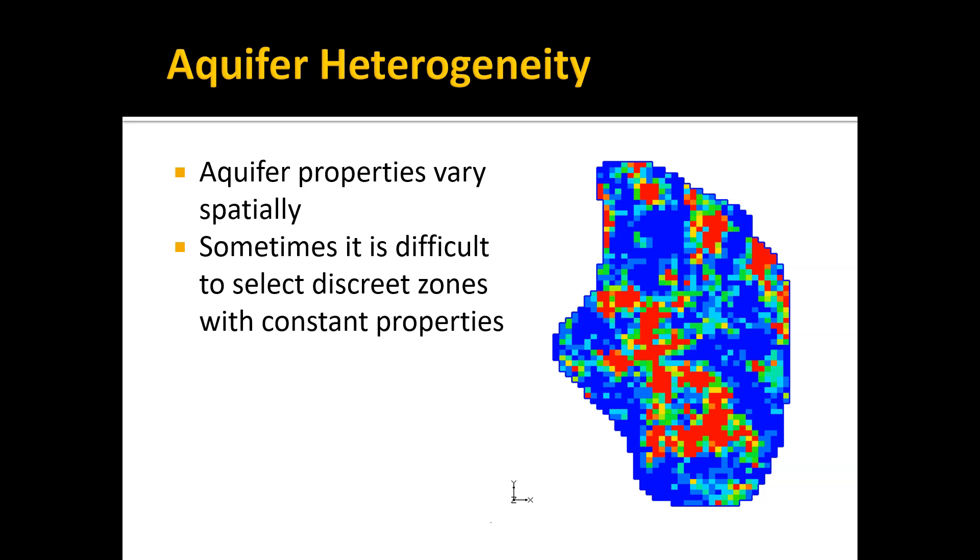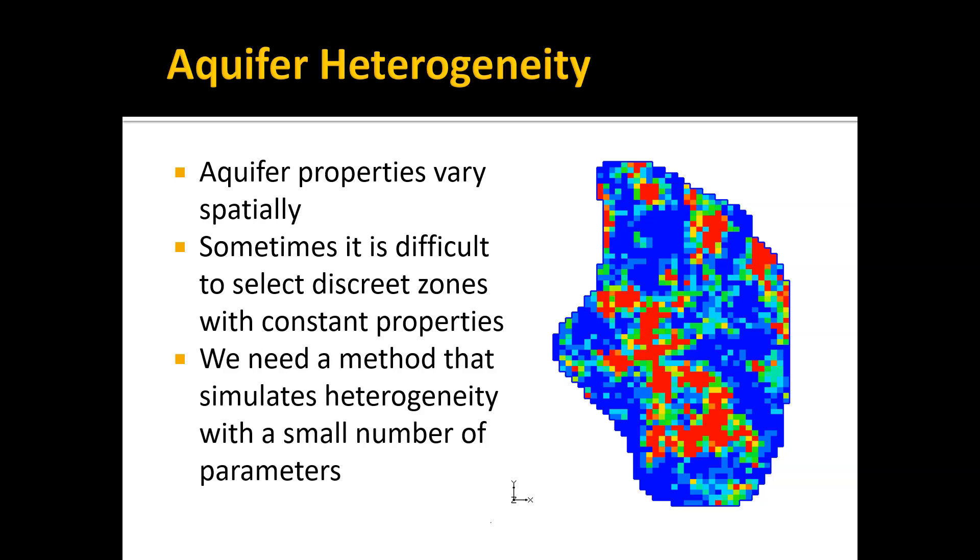In order to simulate that heterogeneity and the impact it has on our model calibration process, we need a method that simulates heterogeneity but does it with a small number of parameters. We can't have a parameter for every grid cell, obviously.